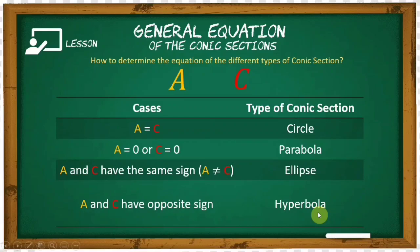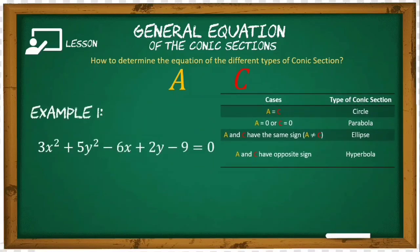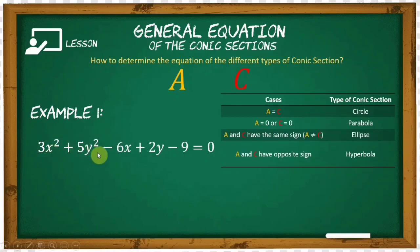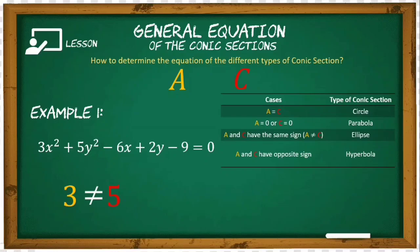For example: 3x² + 5y² − 6x + 2y − 9 = 0. We need to determine the value of a and c. Here, a is the numerical coefficient of x², and c is the numerical coefficient of y². So a = 3 and c = 5. Analyzing them: positive 3 and positive 5 have the same sign, but 3 is not equal to 5. Therefore, this equation represents an ellipse.